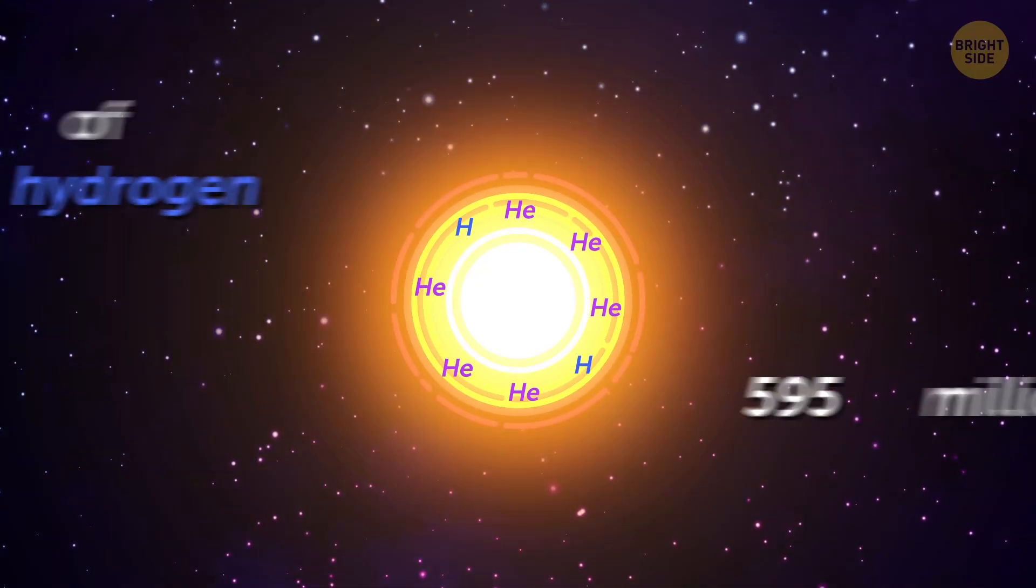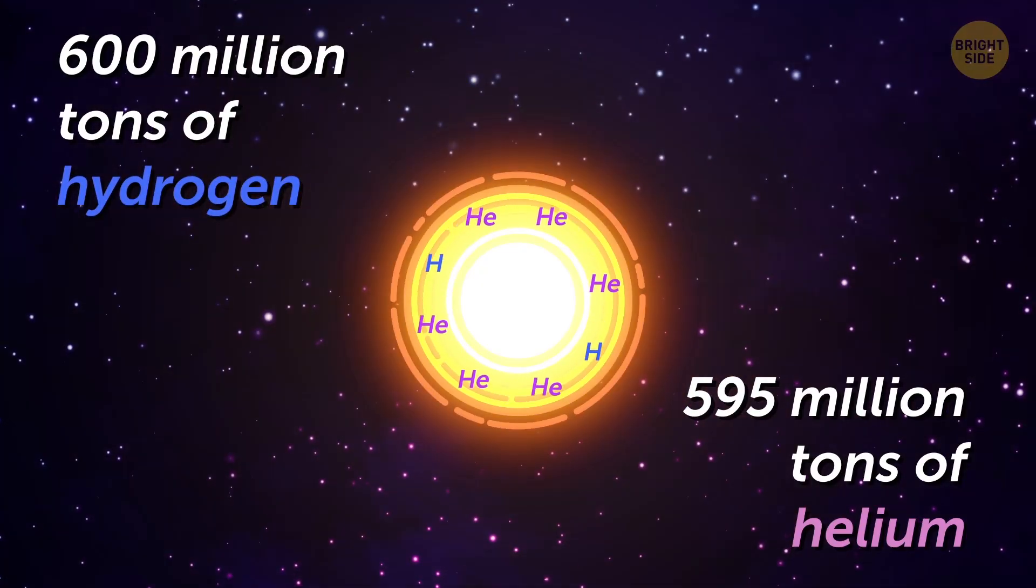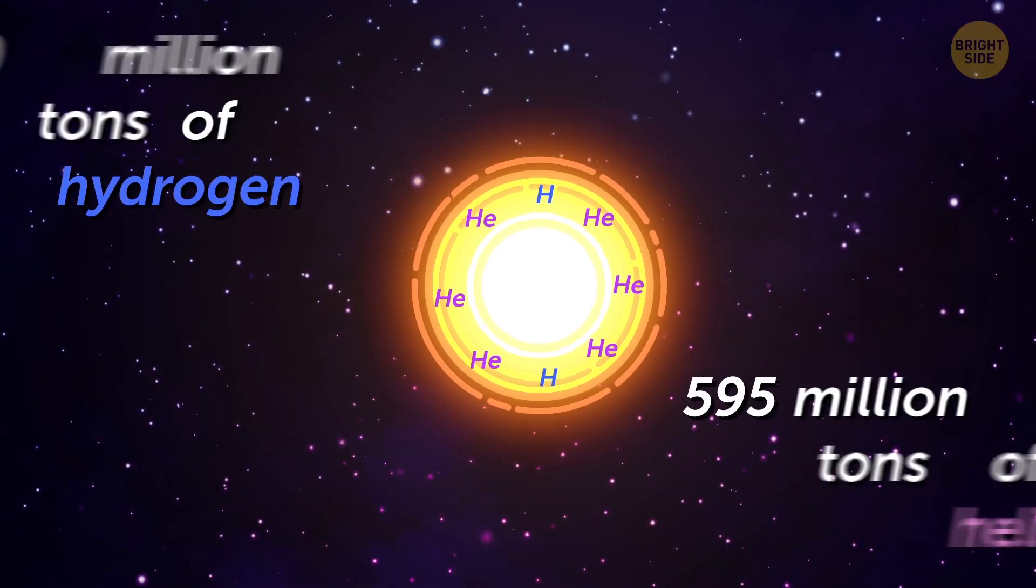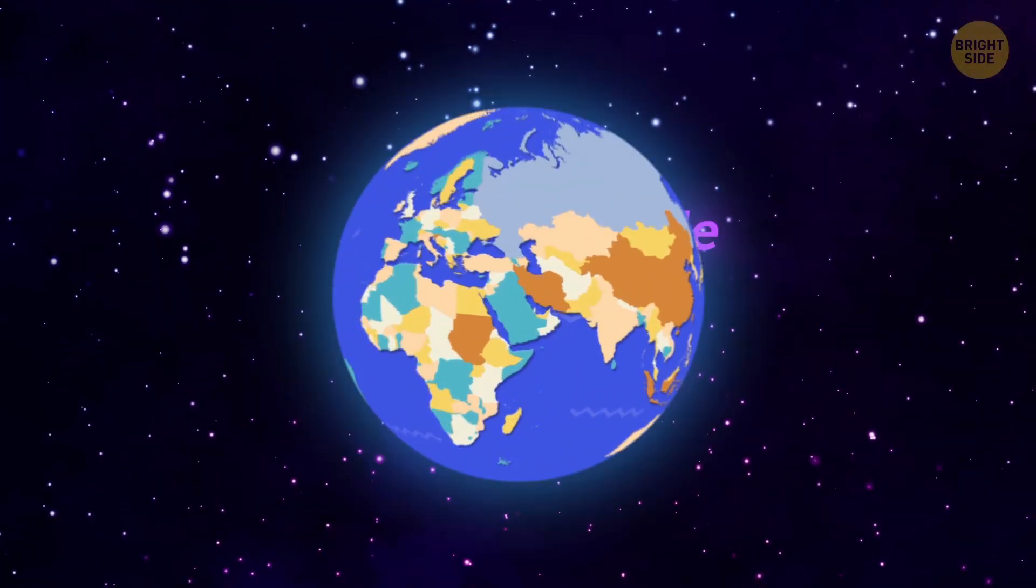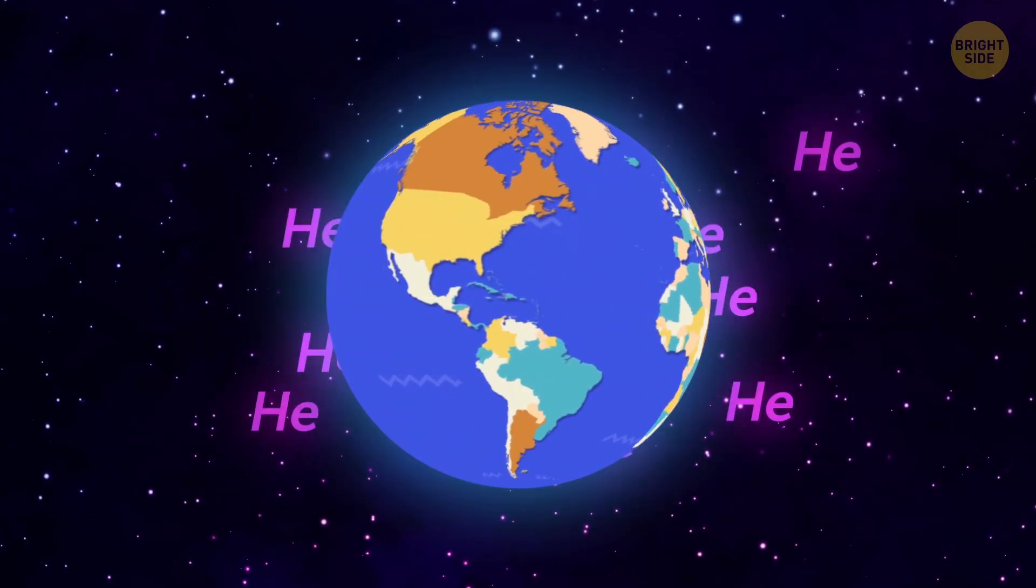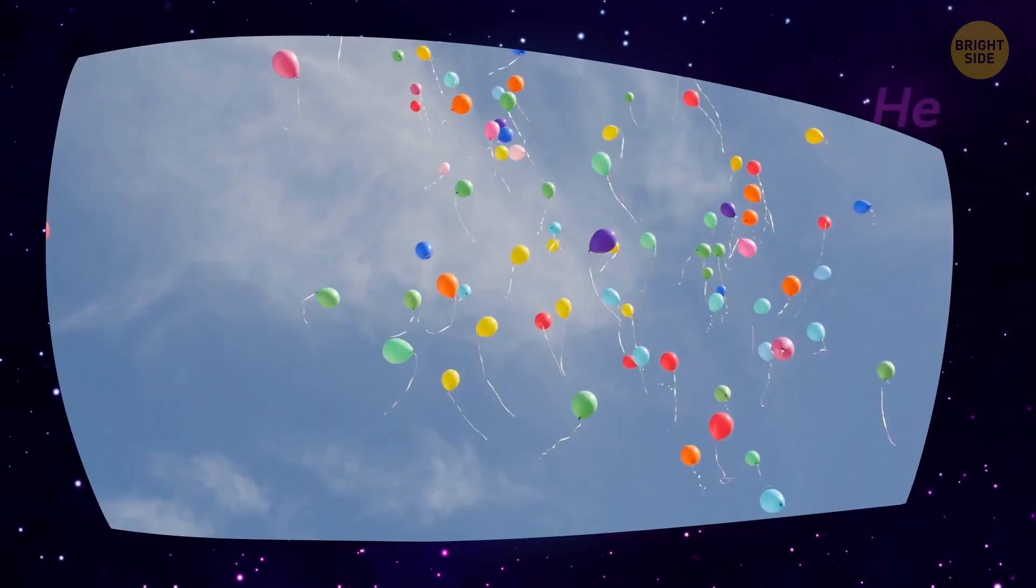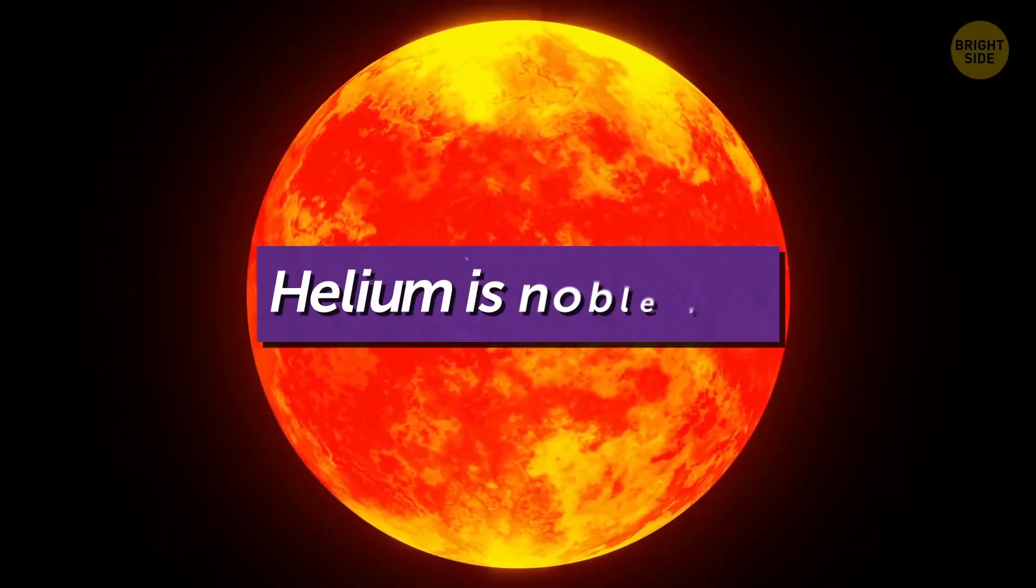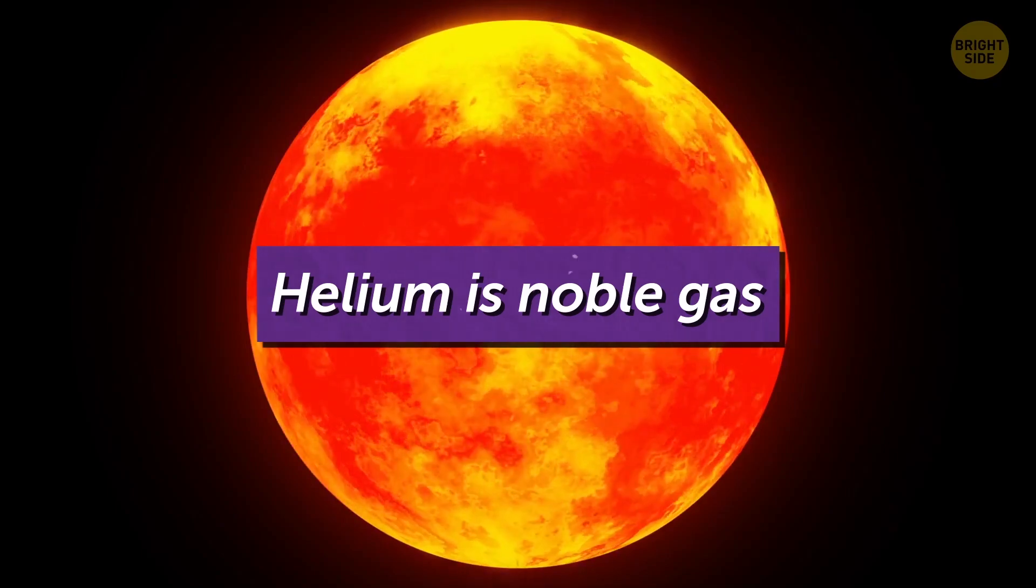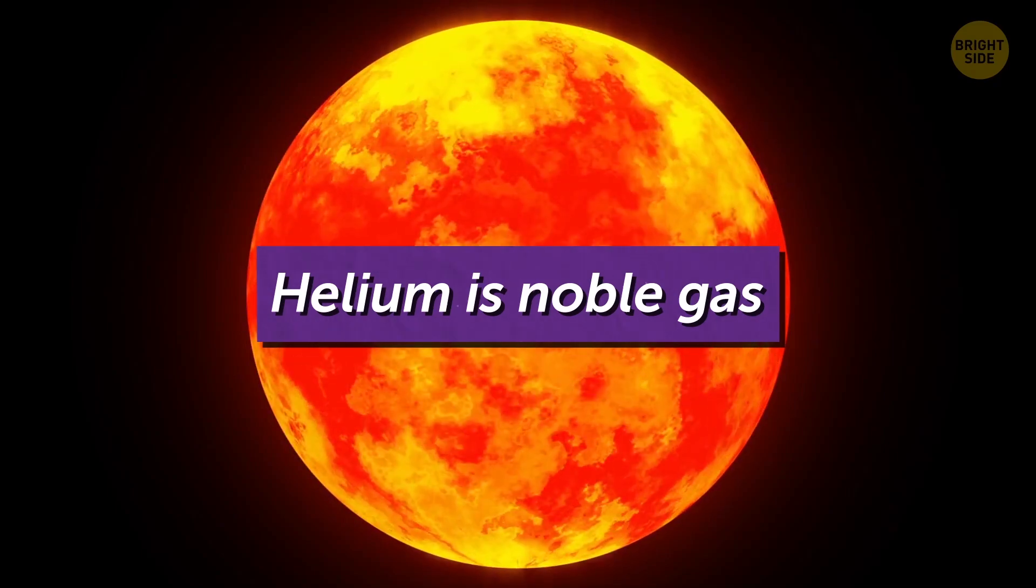600 million tons of hydrogen are fused into 595 million tons of helium. So the question is, why can't we find it on Earth? Well, it sort of leaks out of the atmosphere since it's so light. Which is why helium balloons rush to the sky when you let go of them. Helium is also the first noble gas, which means that it doesn't react with other elements to form compounds.